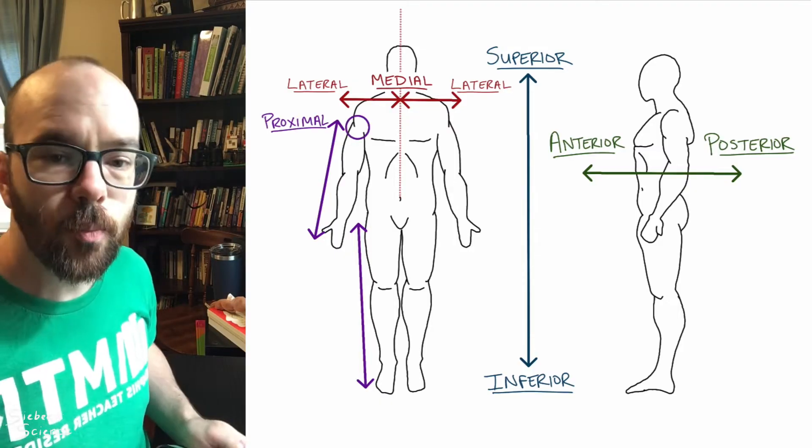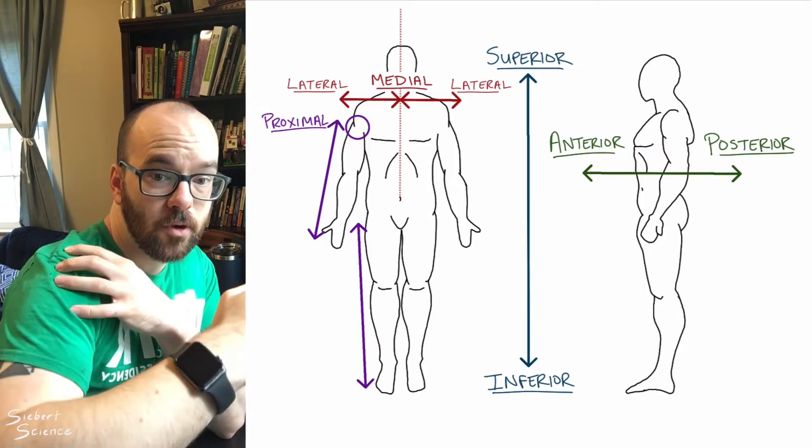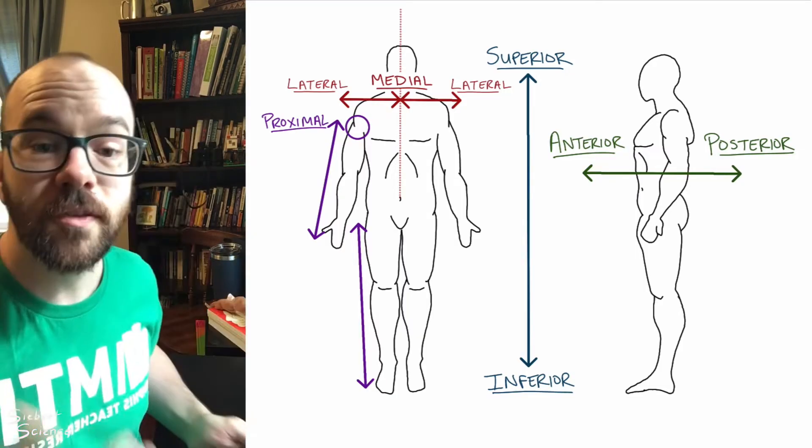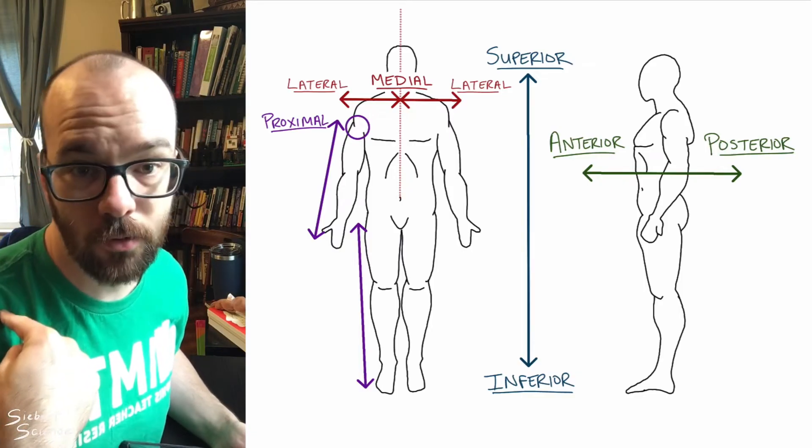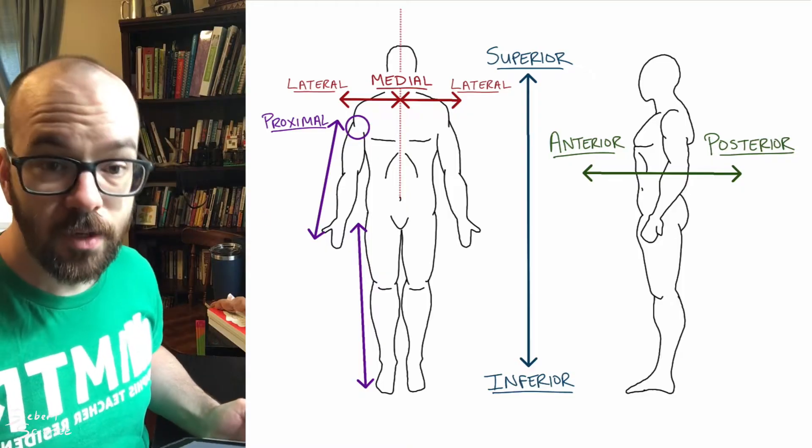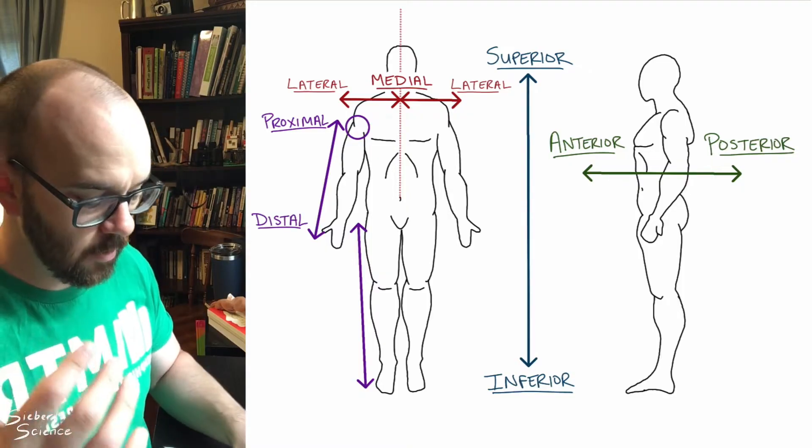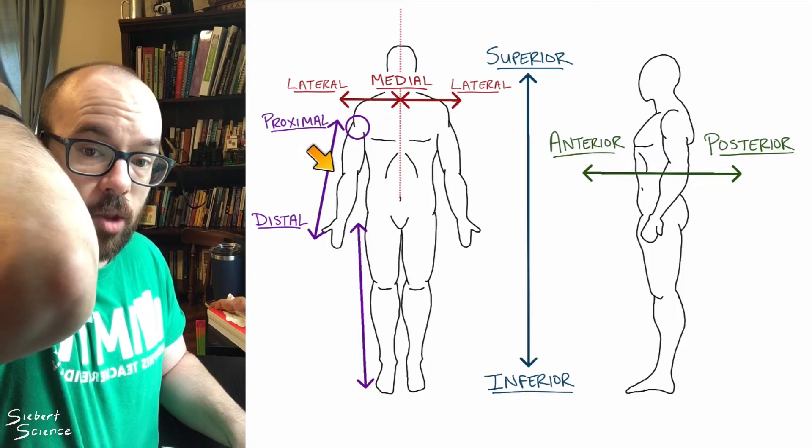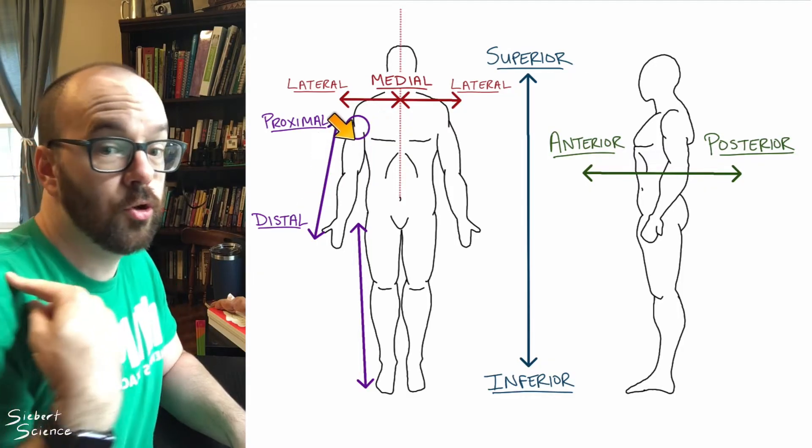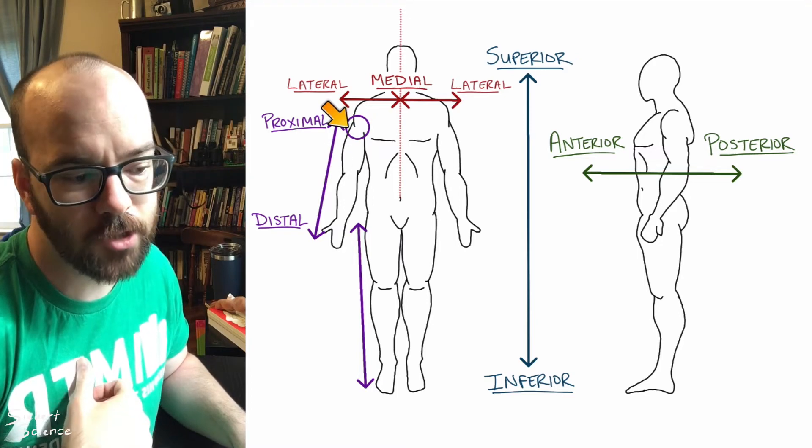Let's talk about the arms first. The point of attachment of your arms is really your shoulder, right? That's where your arms attach to the rest of your body. So if something's proximal, it means it's relatively close to that point of attachment to the shoulder. Distal is the opposite. Distal means it's far from that point of attachment. So for example, my fingers are more distal than my elbow, or my shoulder is more proximal than my elbow because my shoulder is closer to that point of attachment.